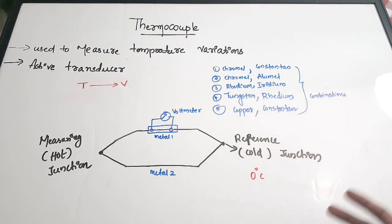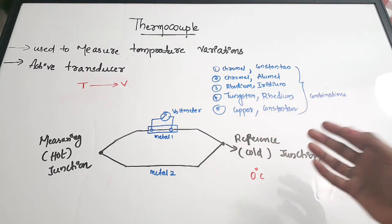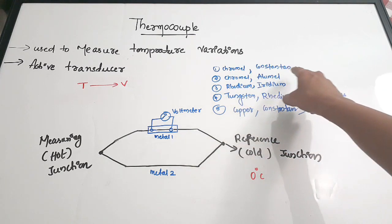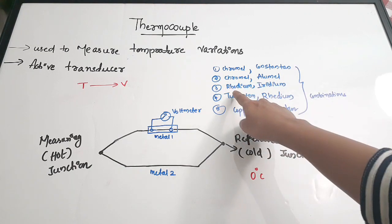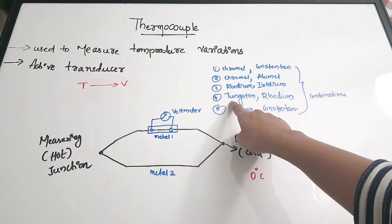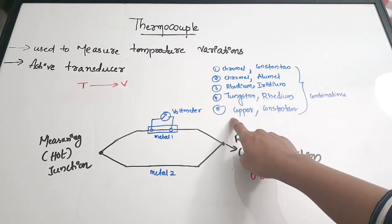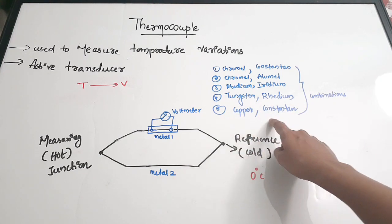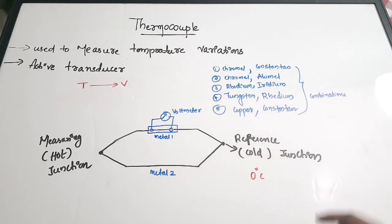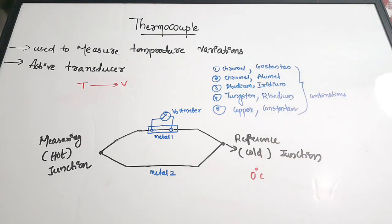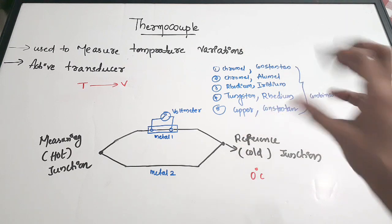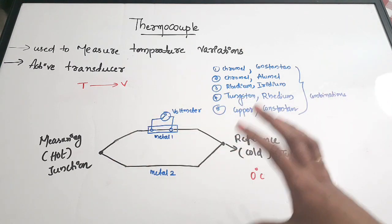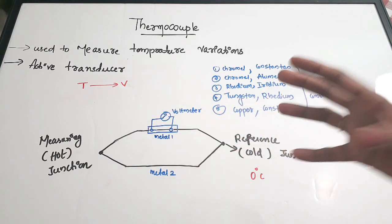The general combinations used for manufacturing thermocouples are: first, chromel-constantan; second, chromel-alumel; third, rhodium-iridium; fourth, tungsten-rhodium; and fifth, copper-constantan. These are the combinations generally used. This is the structure of a thermocouple.